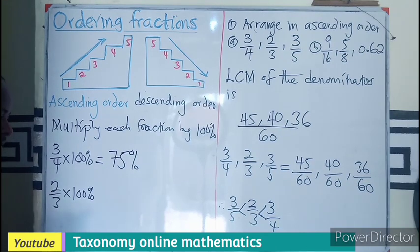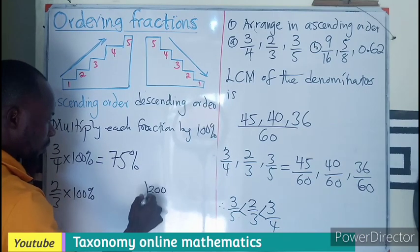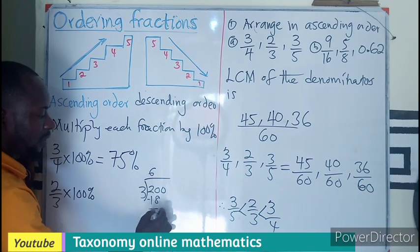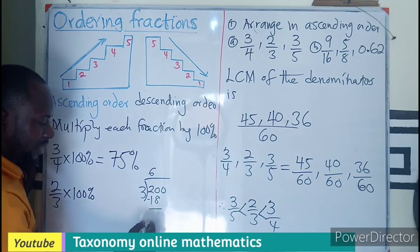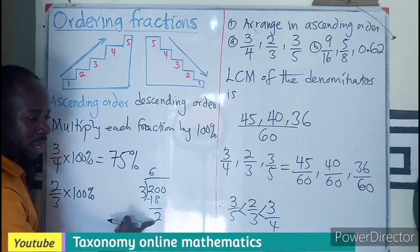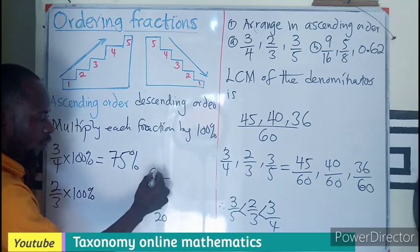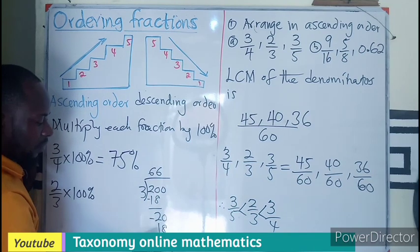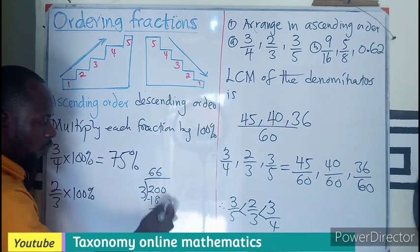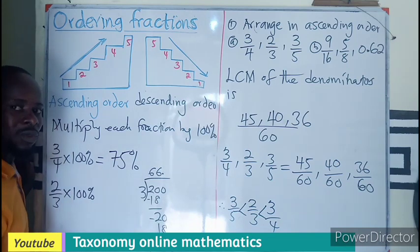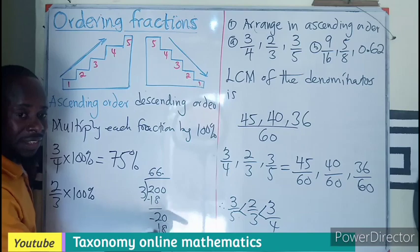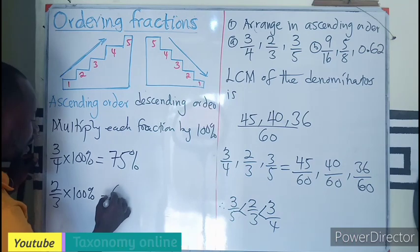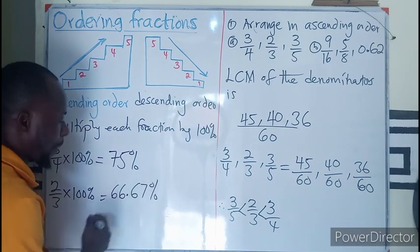200 divided by 3, we can do that division. This will be 6, which is 18. If you subtract you will be having 2. 3 cannot go into 2, so you drop your 0. That would be another 6, which will still be 18. If you subtract you get 2. We don't have any number so we drop a decimal point. If we check, your pattern will be six, six, six. So the answer we are going to get here is going to be 66.67 percent.